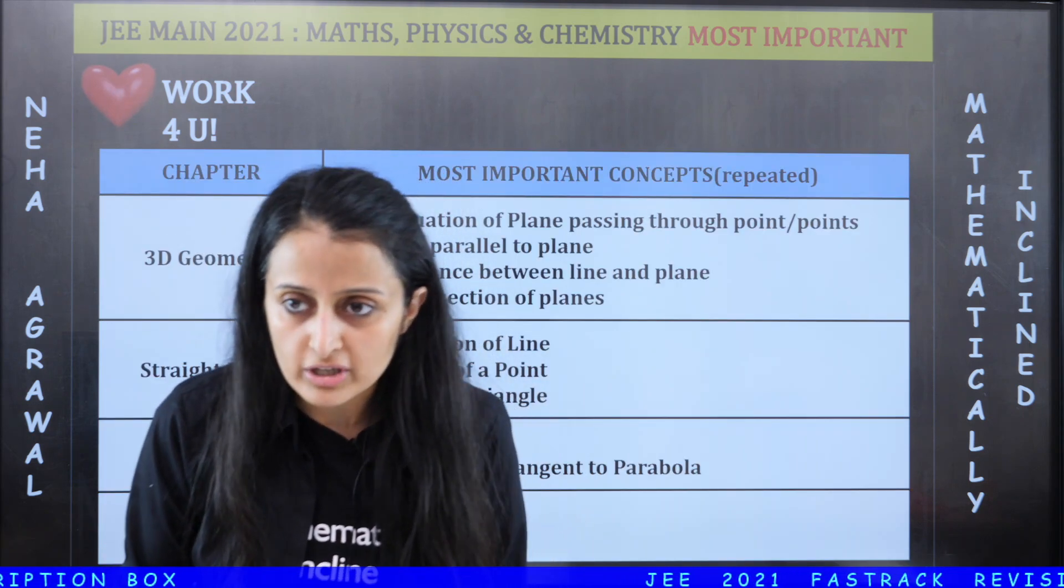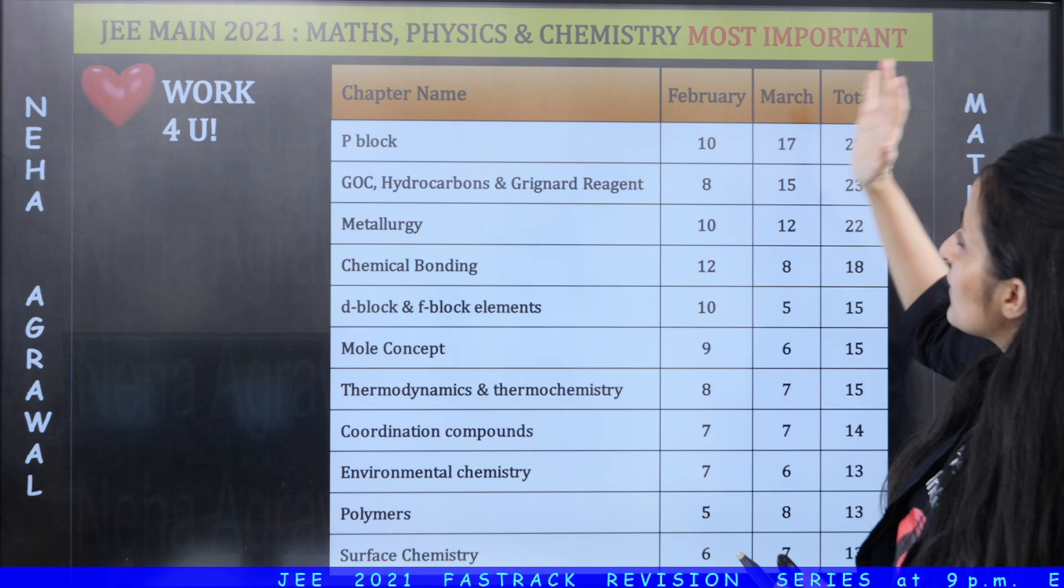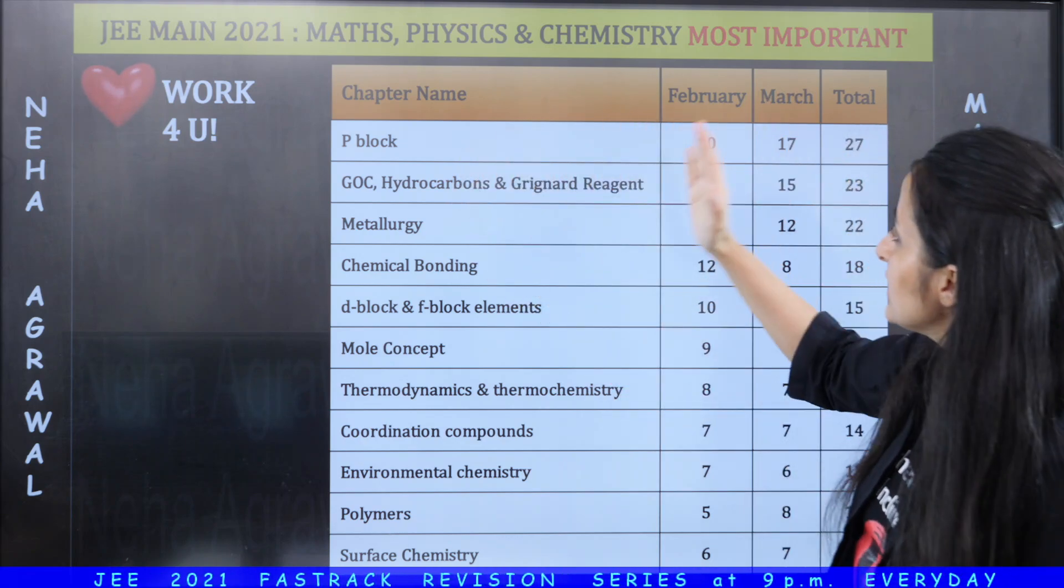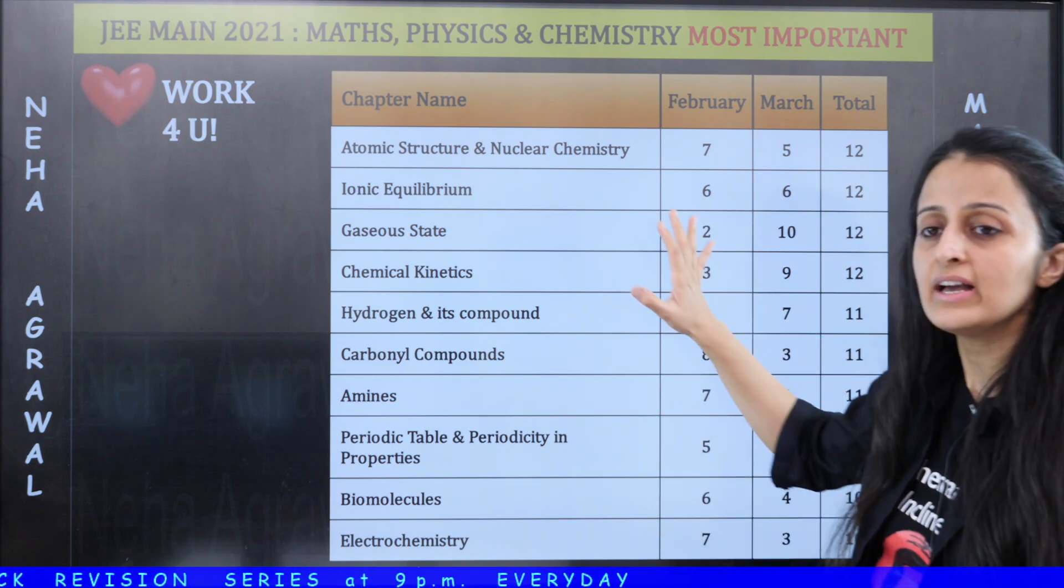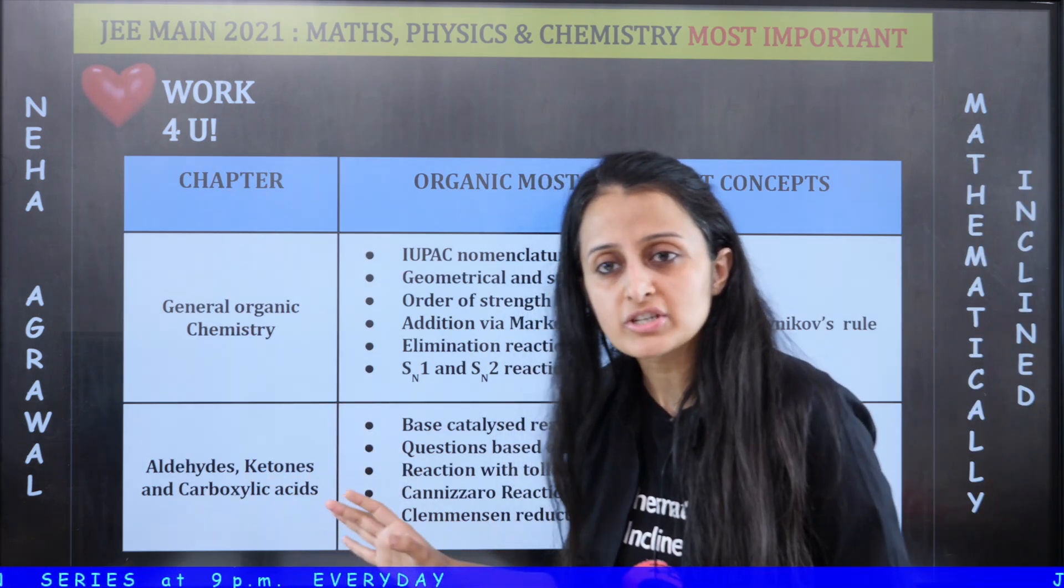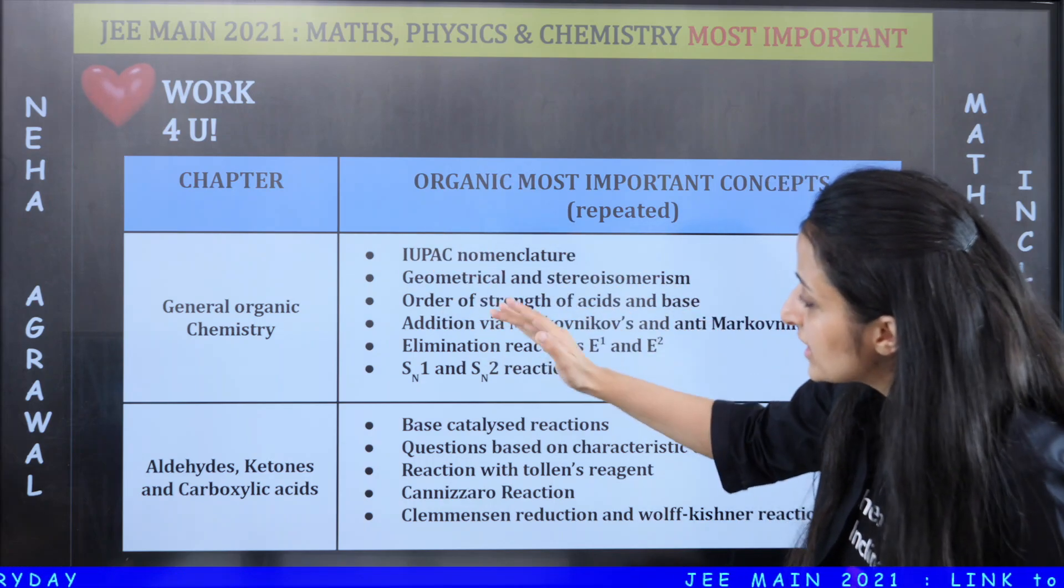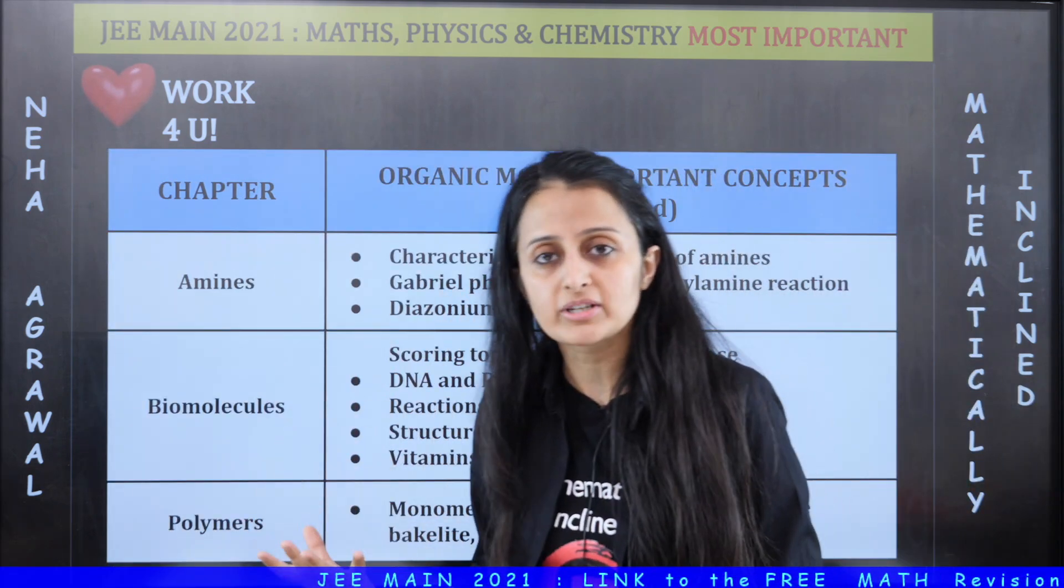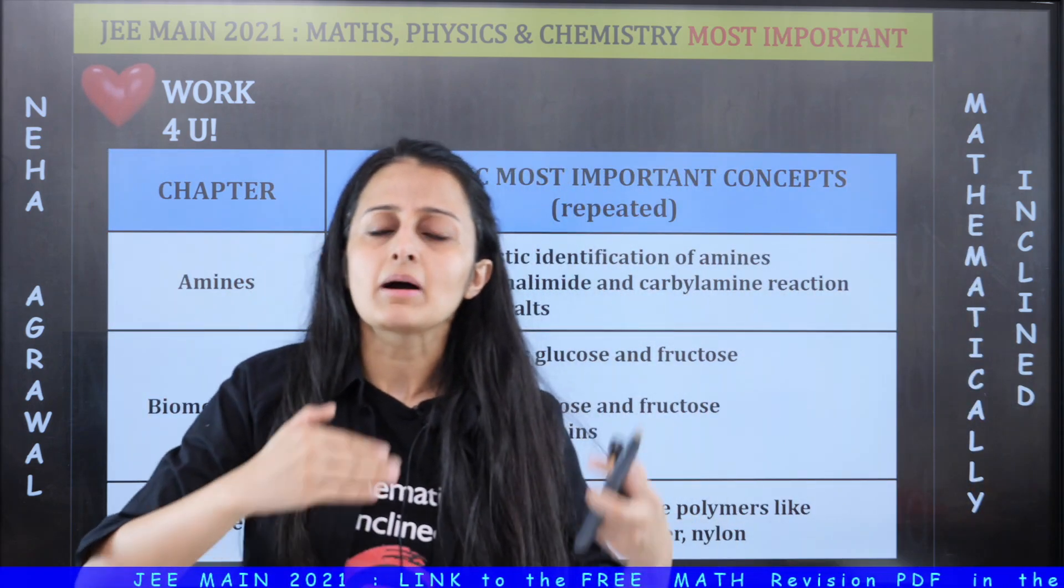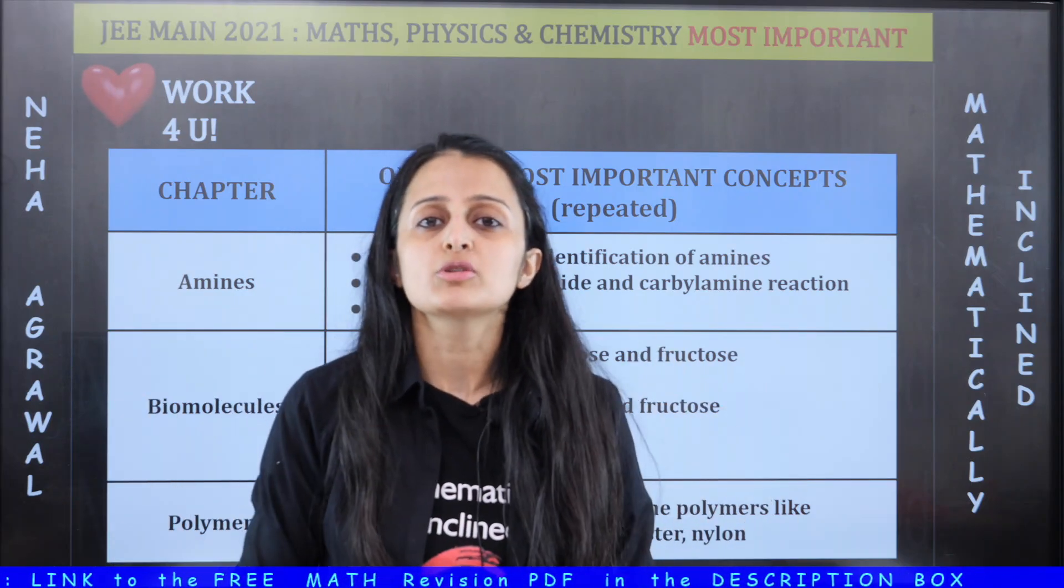Theek hai to yaha par jaisa ke chemistry ke aapke 21 attempt ke february and march mein kis chapter se kitne sawal pooche hain all that has been mentioned and iske baad chapter har chapter mein kaun kaun se topics hain jo sabse zyada repeated hain isliye sabse zyada important hain and similar kaam aapke physics ke liye bhi hua hai. Is PDF ka link aapko description box mein mil jayega.